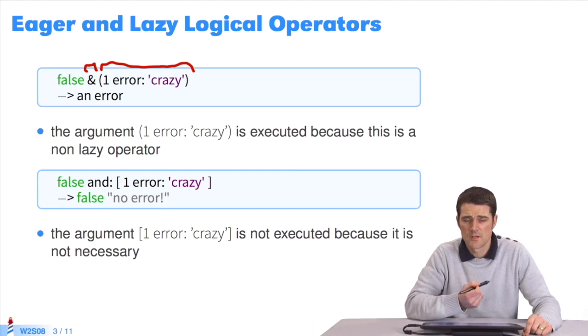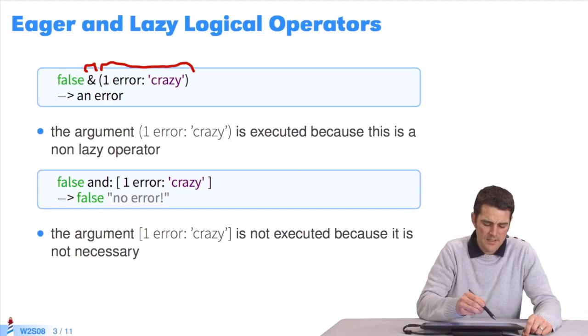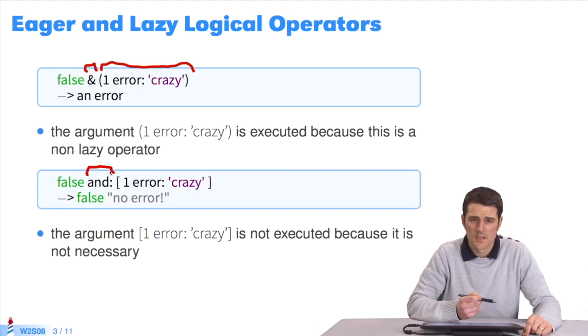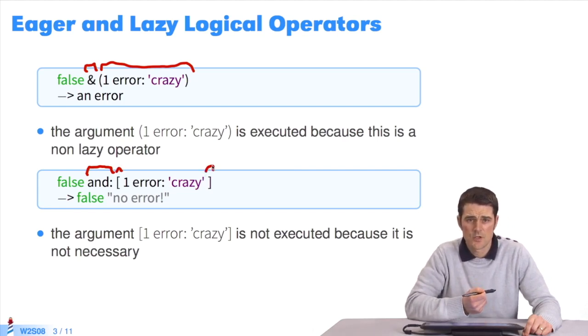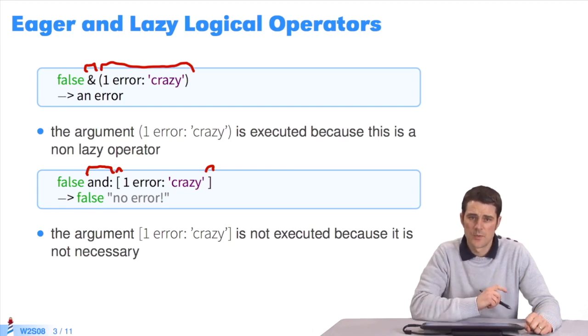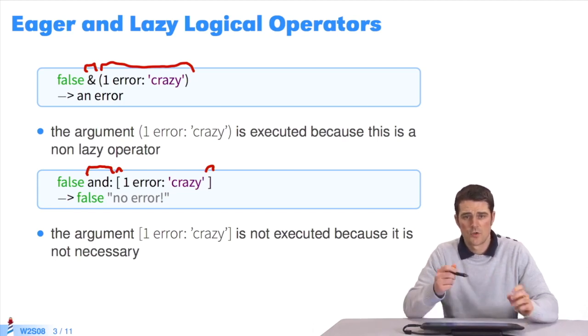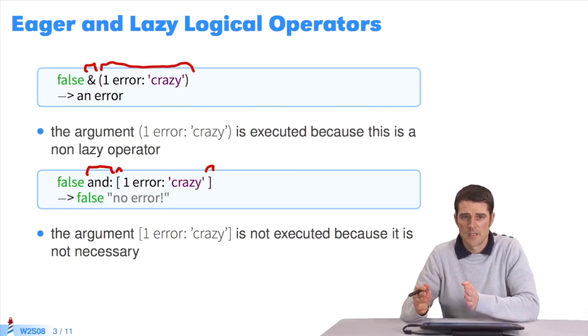If you want the lazy version of Boolean operators, you must use the method AND of the class Boolean. This method takes a block as a parameter. Blocks start with open bracket and end with close bracket. They contain expressions, but the definition of a block doesn't trigger the execution of its expressions. It is only when the first operand is evaluated that the block passed as a parameter is evaluated.